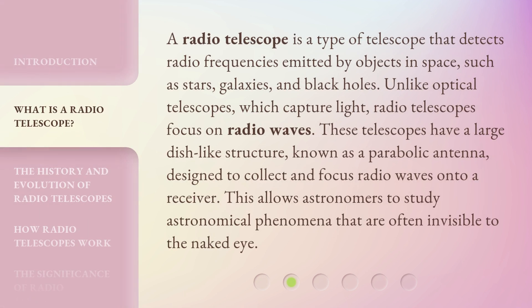A radio telescope is a type of telescope that detects radio frequencies emitted by objects in space, such as stars, galaxies, and black holes. Unlike optical telescopes, which capture light, radio telescopes focus on radio waves.